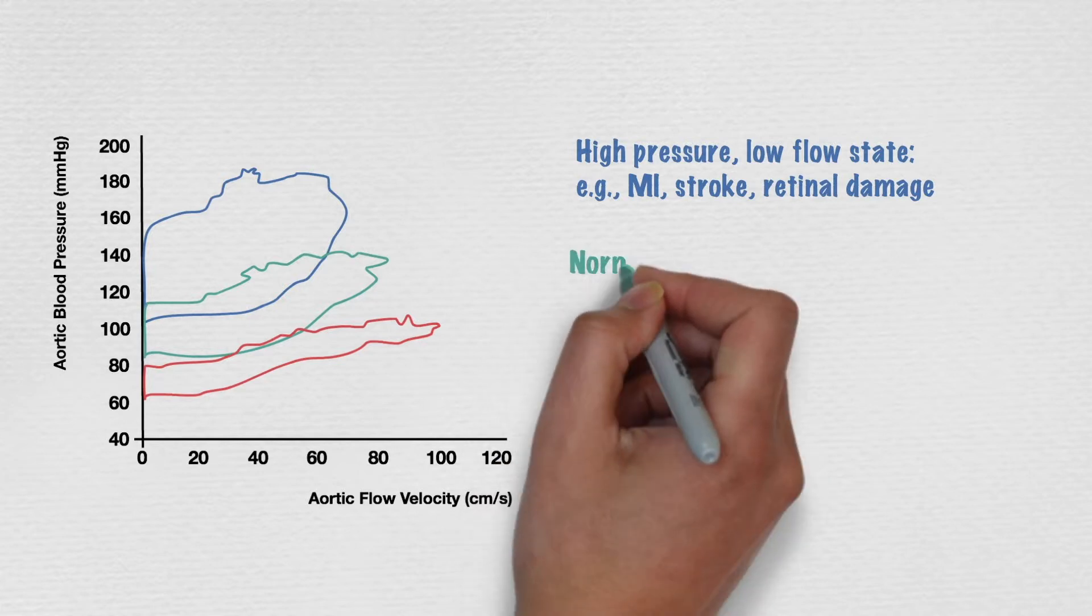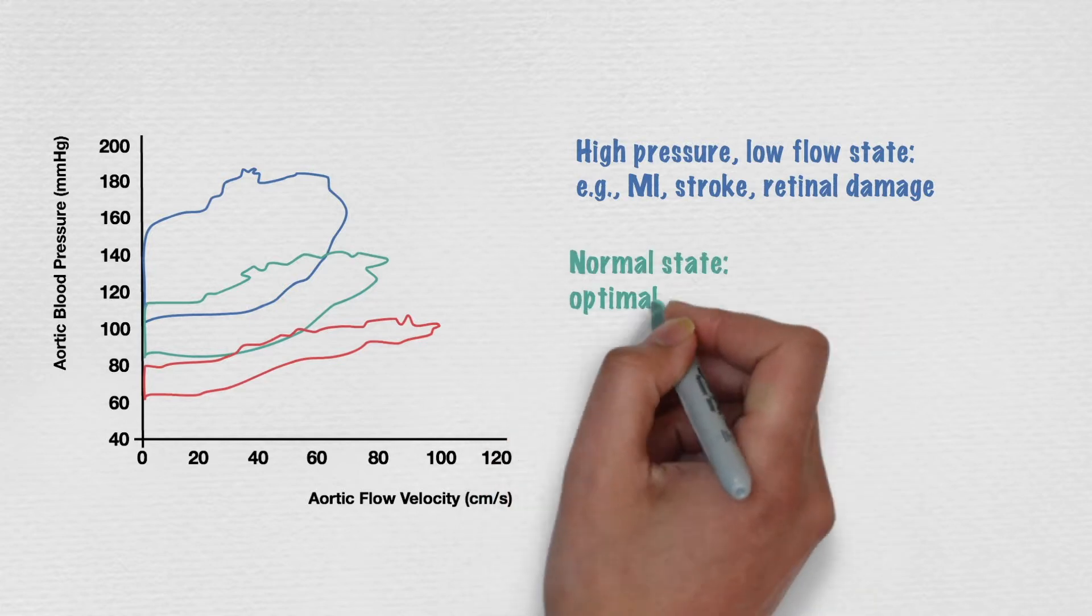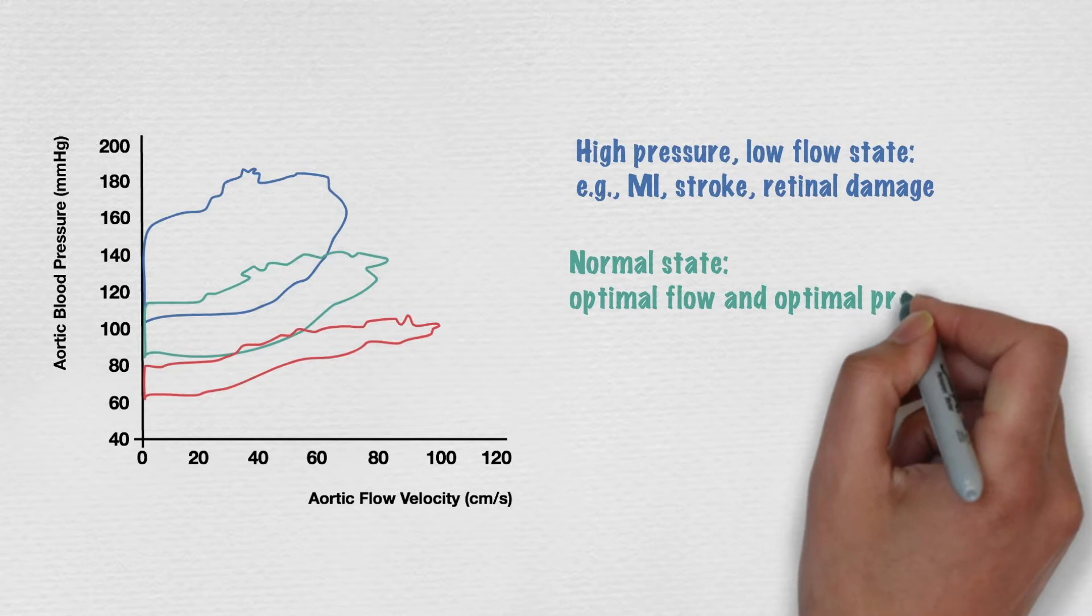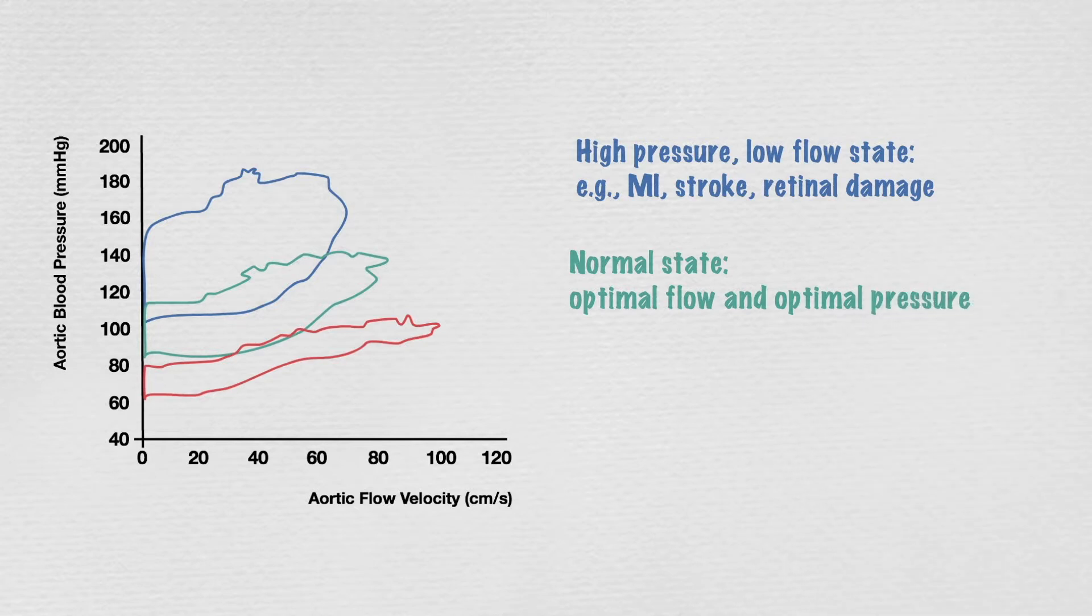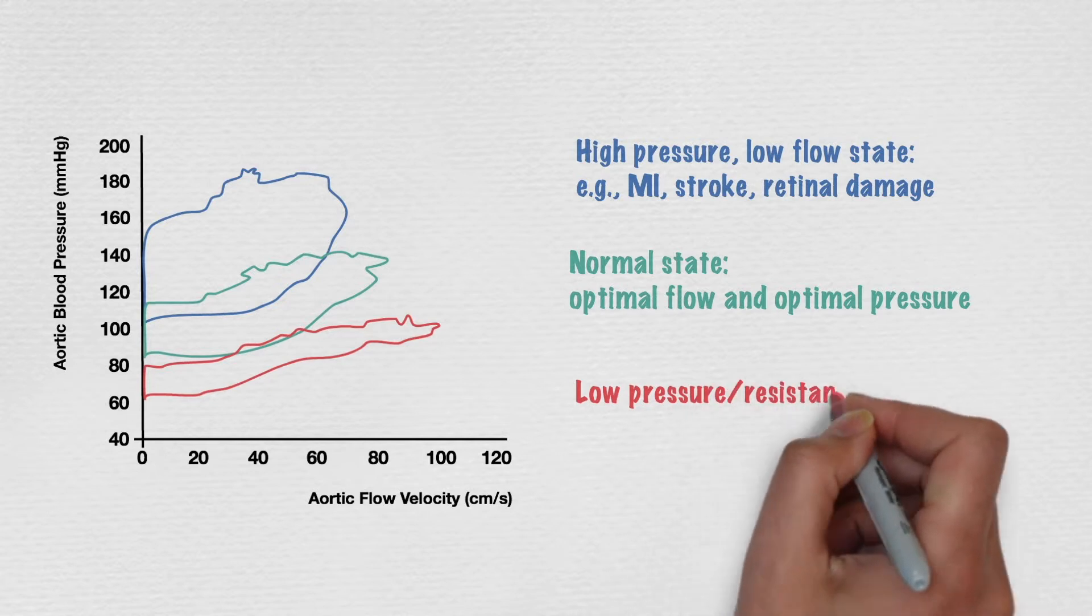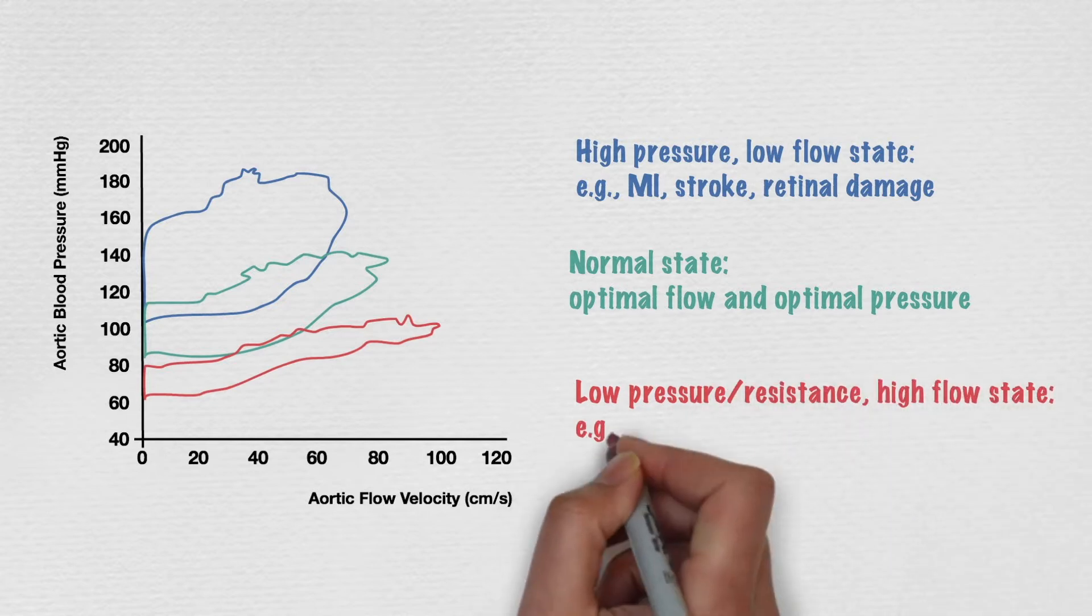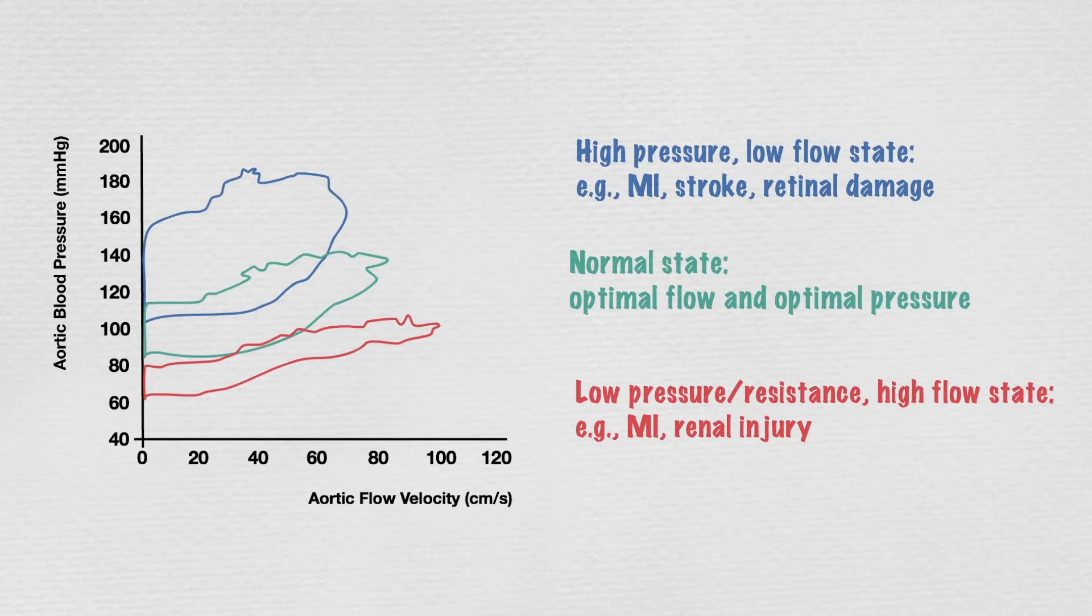The green loop represents a more normal state, with optimal flow and optimal pressure. And the red loop represents a low pressure and resistance state, with high flow, placing patients at risk of conditions such as myocardial infarction and renal damage.